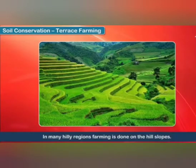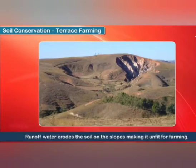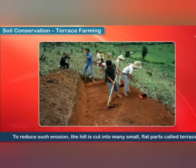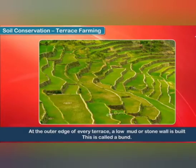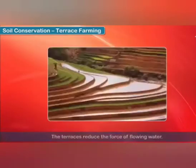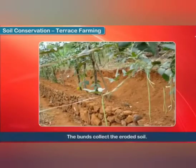The next method is terrace farming. In many hilly regions, farming is done on the hill slopes. Runoff water erodes the soil on the slopes, making it unfit for farming. To reduce such erosion, the hill is cut into many small flat parts called terraces. At the outer edge of every terrace, a low mud or stone wall is built, called a bund. The terraces reduce the force of flowing water, and the bunds collect the eroded soil.